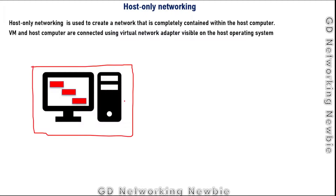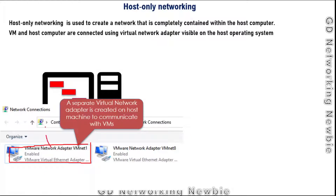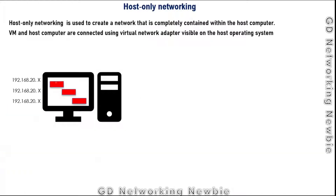In host-only networking, VMs and the host computer are connected using a virtual network adapter that is visible on the host operating system. On Windows 10, we have something like the VMware network adapter VM1, and that VM1 is configured as a host-only adapter, which is used to communicate with the virtual machines in the host-only network.